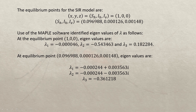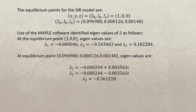Eigenvalues were found for both equilibrium points — lambda one, lambda two, and lambda three. For the disease-free equilibrium point (1, 0, 0), two eigenvalues are negative and one is positive, so this equilibrium is unstable. For the second equilibrium point, the real parts of the eigenvalues are all negative, so this equilibrium point is stable.